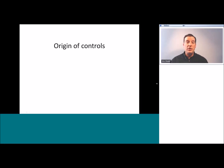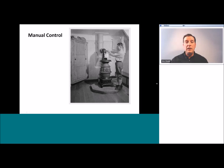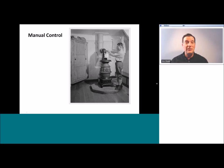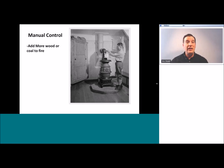We're going to use that approach with electronic circuit boards. In the beginning, in indoor comfort heating systems, the only kind of control we had was manual. Here's an example of a manually controlled heating appliance — the potbelly stove. The only way to actually control the comfort level produced by this appliance is to either add more wood or coal to the fire, which is a manual operation.